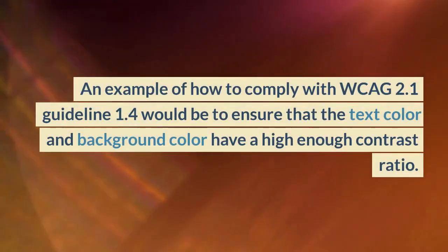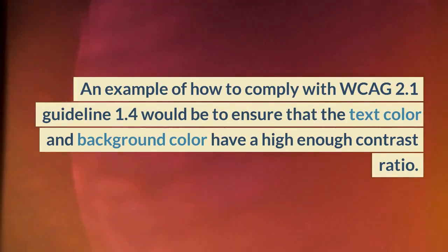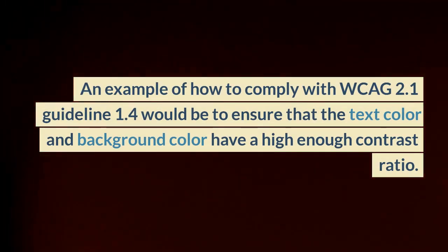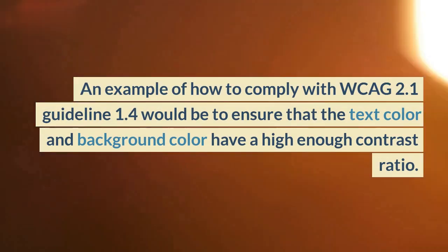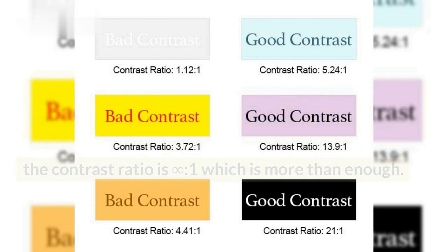An example of how to comply with WCAG 2.1 guideline 1.4 would be to ensure that the text color and background color have a high enough contrast ratio. For example, if the text is black and the background is white, the contrast ratio is 1 to 1, which is not enough. But if the text is white and the background is black, the contrast ratio is 21:1, which is more than enough.